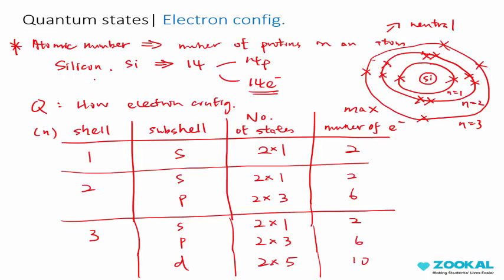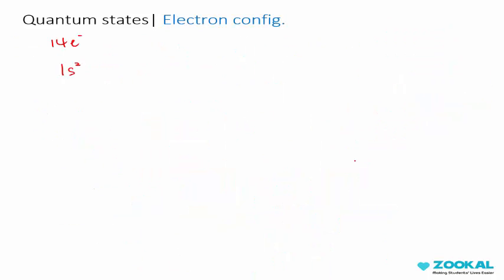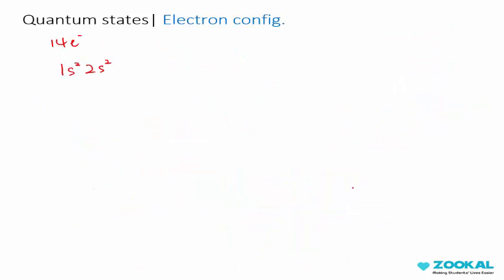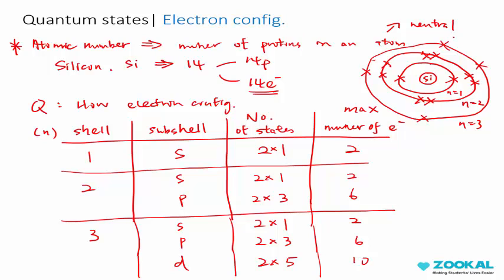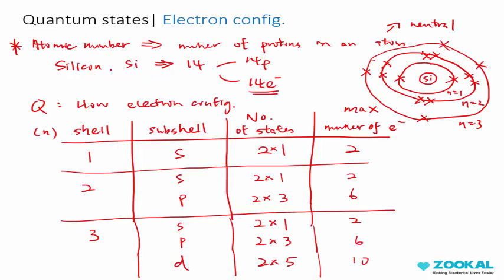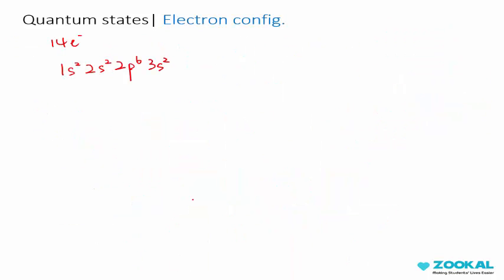The next state is shell 2, subshell S, 2 maximum number of electrons. So you write 2S2. The next one is shell 2, subshell P, 6 number of electrons, so 2P6. Remember we have 4 more only. The next one is 3S2, then you have 2 more, so you have 3P, not 6, you have 2 more only, so 3P2. This is your electron configuration of silicon.